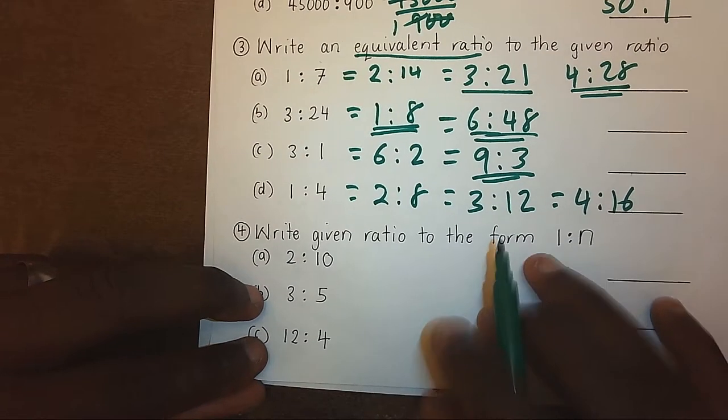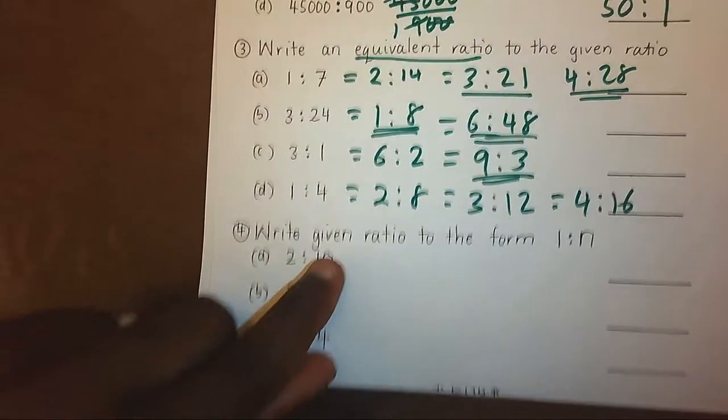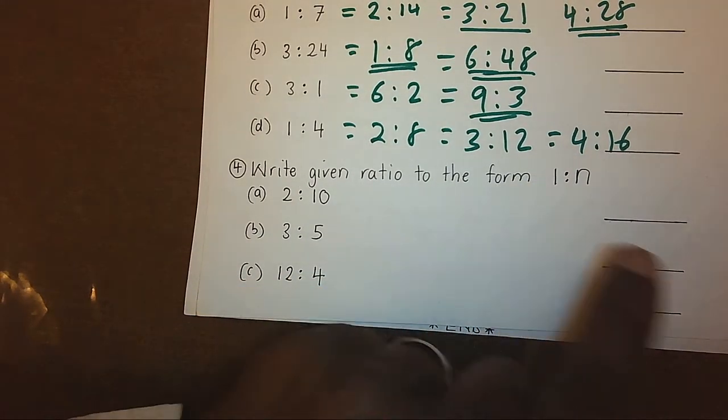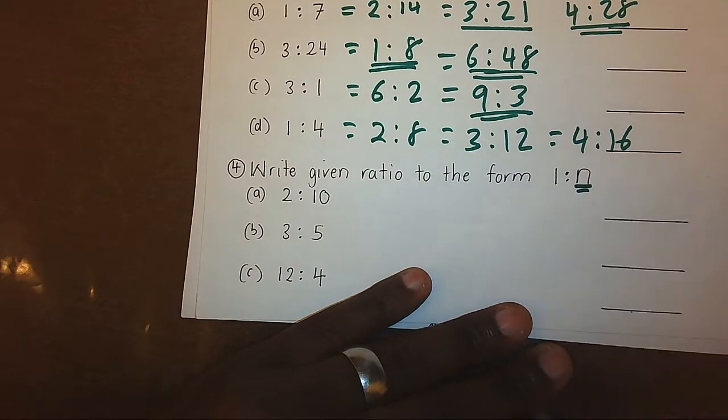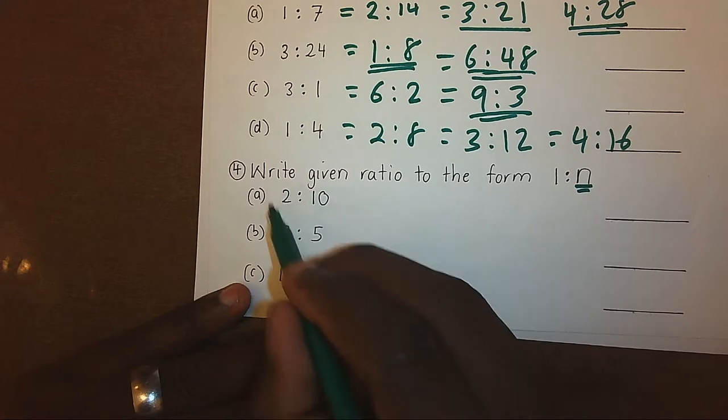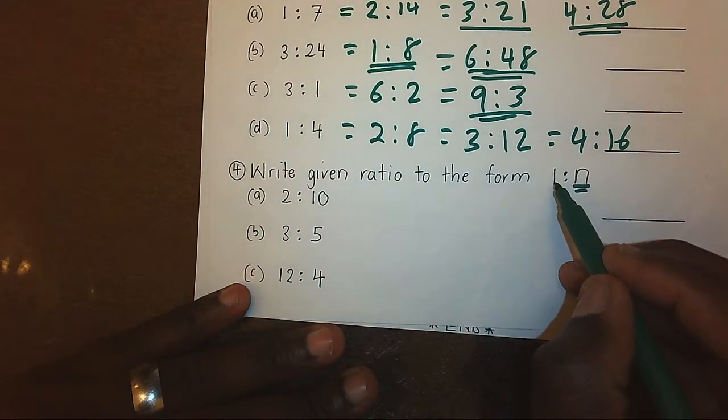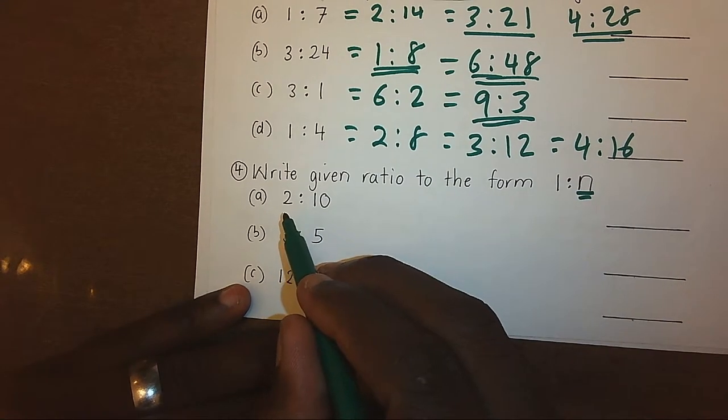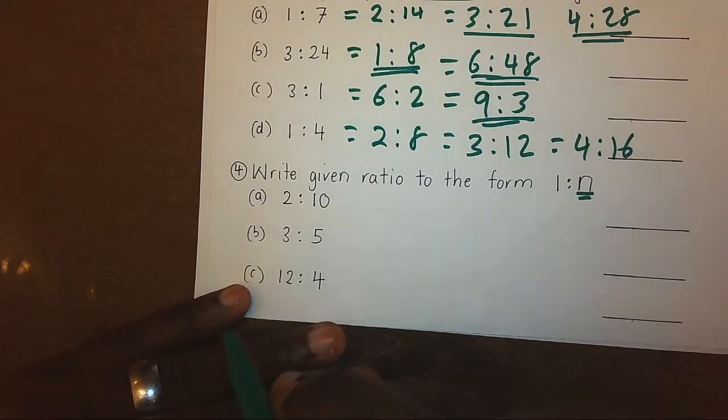Another situation: write given ratio to the form 1 ratio N. What do you mean when you have N? This means make the first ratio 1. Then whatever will remain will represent the side of N. How do you make the first ratio 1? By getting that ratio and dividing it by itself on both sides.